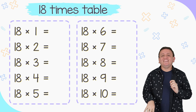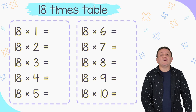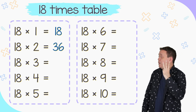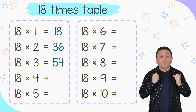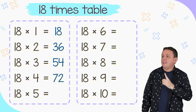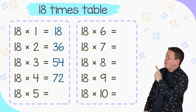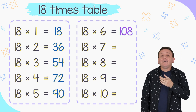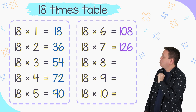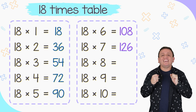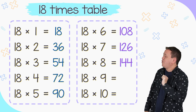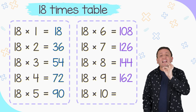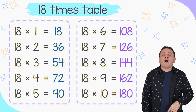Let's continue with the 18 times table. 18 times 1 equals 18. 18 times 2 equals 36. 18 times 3 equals 54. And 18 times 4 equals 72. 18 times 5 equals 90. 18 times 6 equals 108. And 18 times 7 equals 126. 18 times 8 equals 144. 18 times 9 equals 162. And the last one: 18 times 10 is equal to 180.